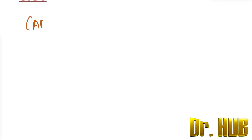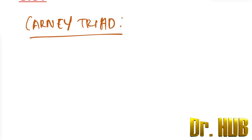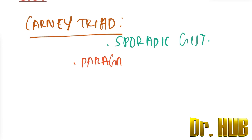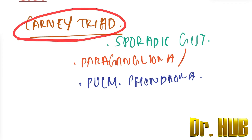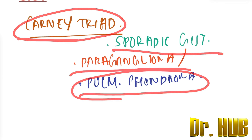There is a very important Carney triad, which consists of: sporadic GIST, paraganglioma, and pulmonary chondroma.